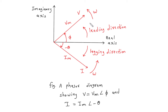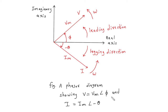Here we can see this is a phasor diagram showing V is equal to Vm at an angle of phi, and I is equal to Im at an angle of minus theta. These phasors are given in polar form, which is called polar form.